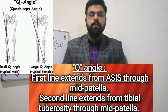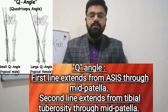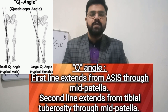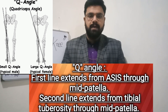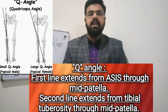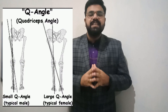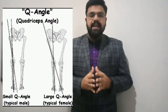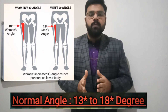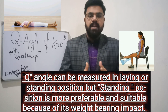The Q angle is formed at the point of intersection of two lines. The first line extends from the anterior superior iliac spine through the mid-patella, and the second line extends from the tibial tuberosity through the mid-patella. The point where these two lines intersect forms the Q angle, and the normal values vary between 13 degrees to 18 degrees.